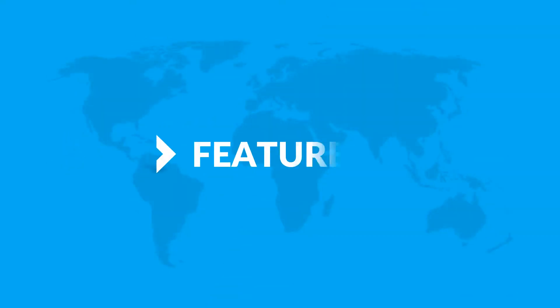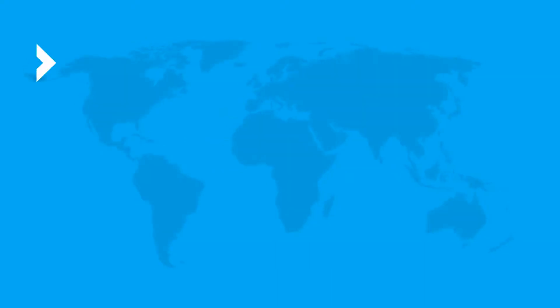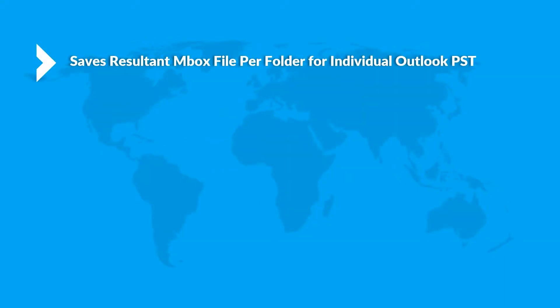Now let's check out the main features of the software. The tool saves the resultant Mbox file per folder for individual Outlook PST, and there is no PST file size restriction to export Outlook PST to Mbox file format.